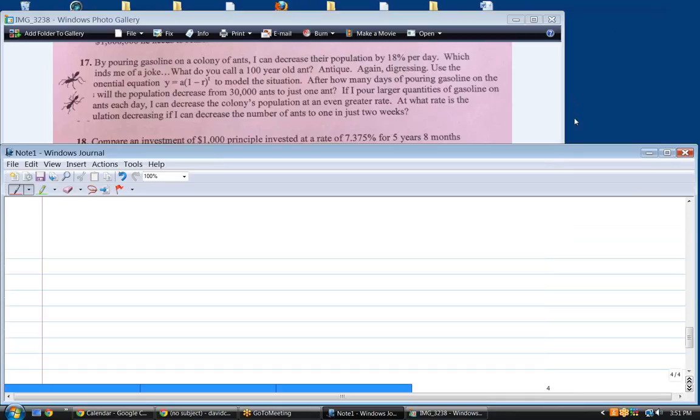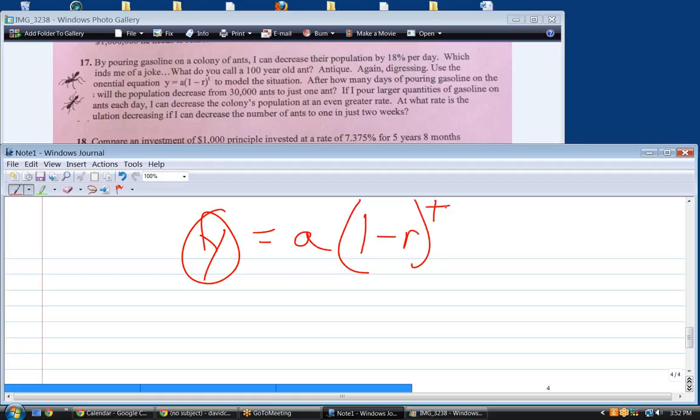Okay. It's really going to be a similar problem, only we're using a different equation. We're going to use the amount equals the starting amount times one minus r to the t. This is the equation you would use for compounded yearly. Not sure why they're using this equation, especially since we're going to decrease the population by 18 percent per day. I guess t is going to be days. Okay.